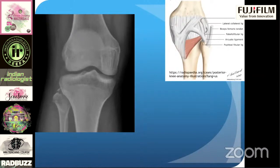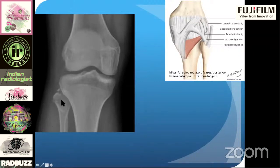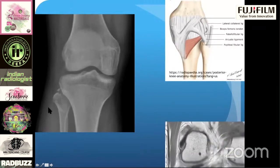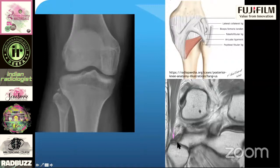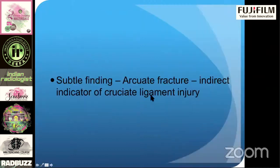Posterolateral corner injury can happen with both ACL and PCL injuries. If this fracture is present, you know some cruciate ligament is injured. When the patient has an ACL tear and goes for ACL graft reconstruction, if the posterolateral corner injury is not identified on X-ray or MRI — and the fracture is very small, easily missed on MRI — the patient will result in ACL graft failure and require second surgery. So it is an arcuate fracture or posterolateral corner fracture, and an indirect indicator of cruciate ligament injury.